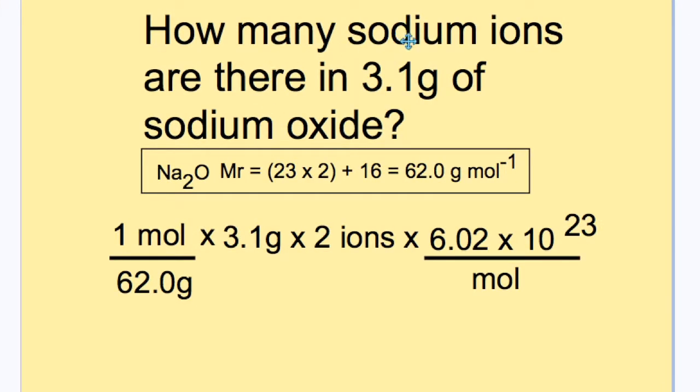Next we set up the calculation like this, noting that 1 mole is made up of 62 grams, and we have a sample of 3.1 grams, and that for every oxygen we have in every unit of sodium oxide, there are 2 sodium ions. So we have 1 mole, 62 grams, multiplied by 3.1 grams.